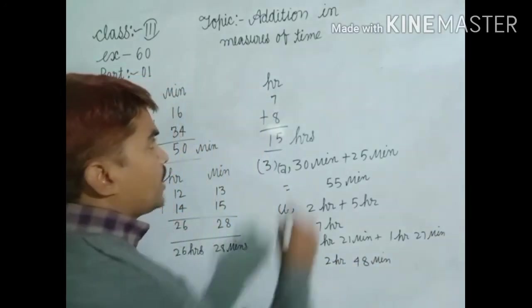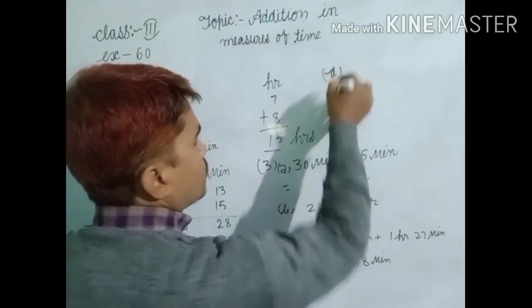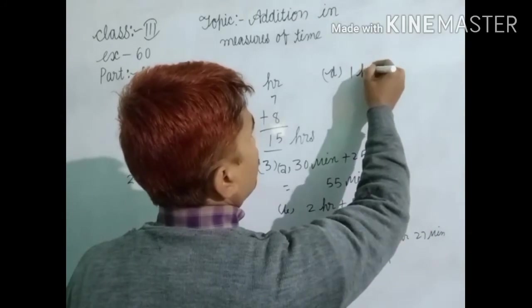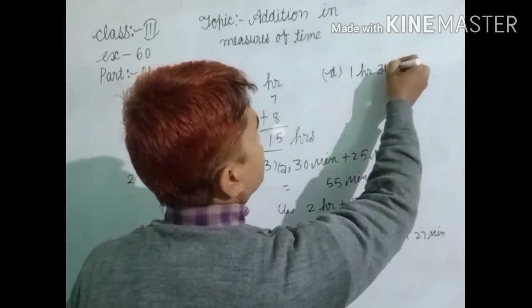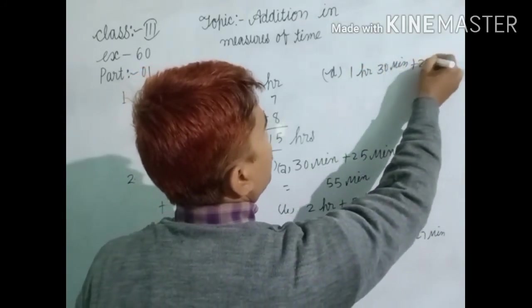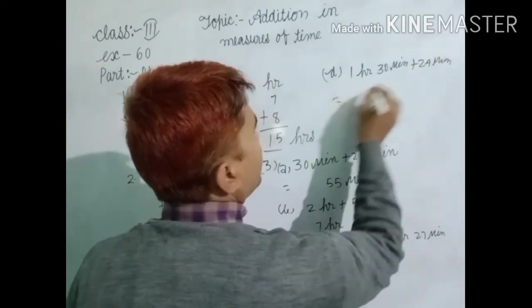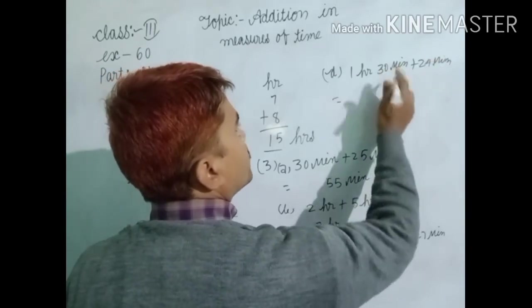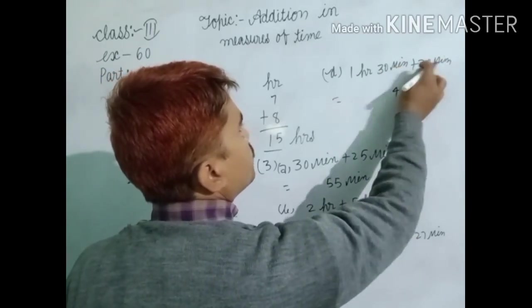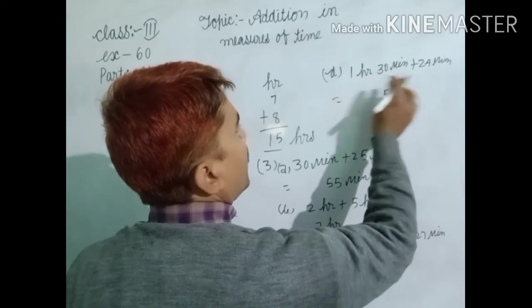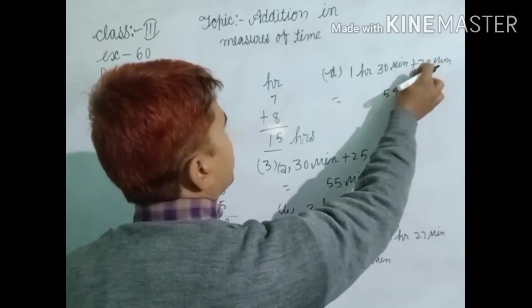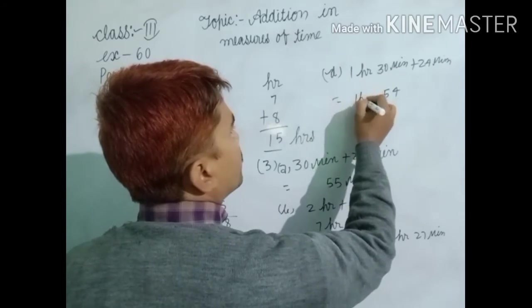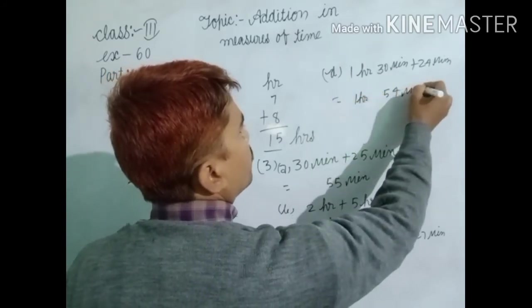Now, last question for this topic. 1 hour 30 minutes plus 24 minutes. Dear students, here minute terms. First of all, add 4 plus 0, 4. 2 plus 3, 5. And here, no hours represented. But here, 1 hour. So, put here 1 hour, 54 minutes.